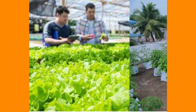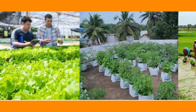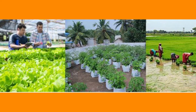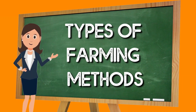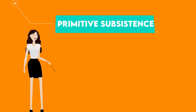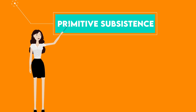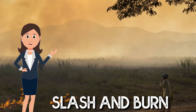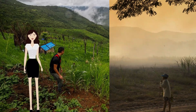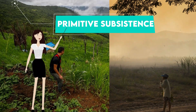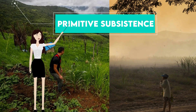In different areas, different farming methods are practiced, and we have to discuss those methods in this chapter. So let's start with Primitive Subsistence Agriculture. We have to study the Slash and Burn method, also known as Shifting Cultivation, which is the Primitive Subsistence Farming.